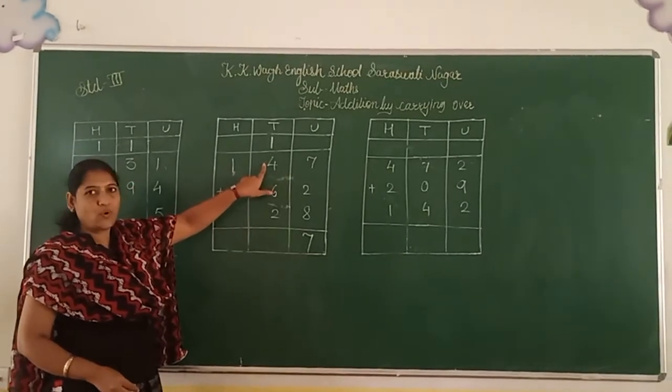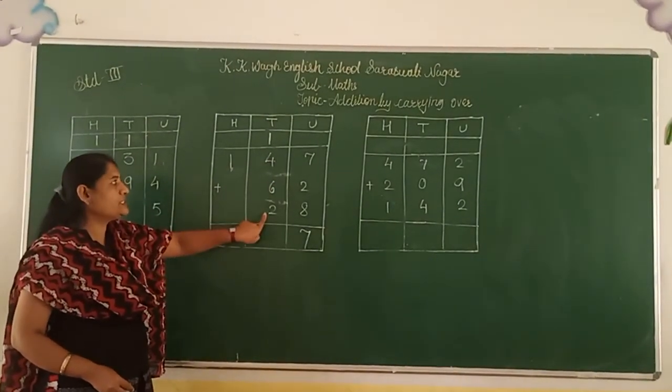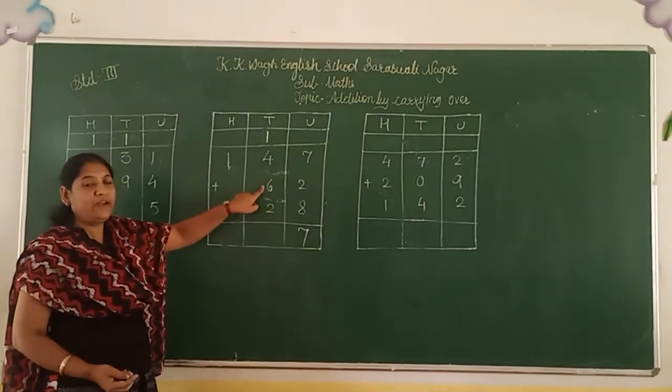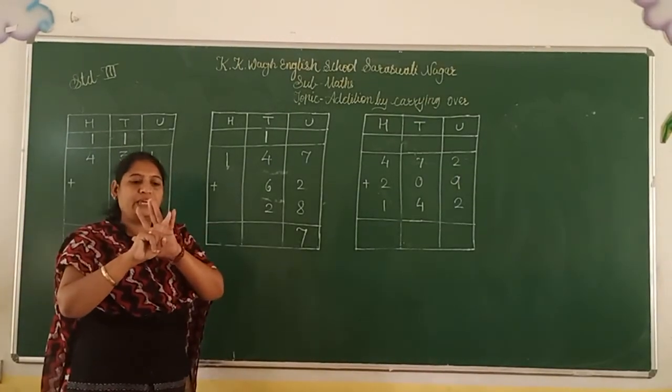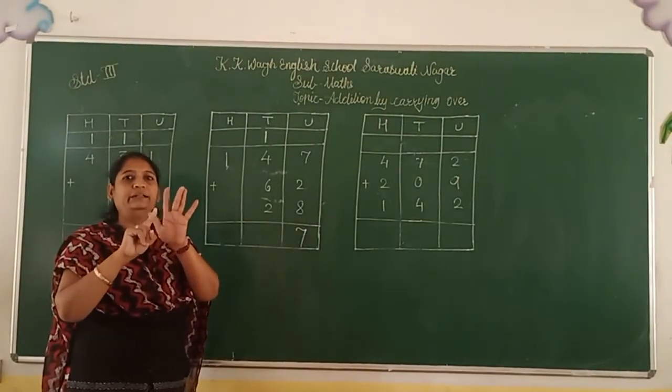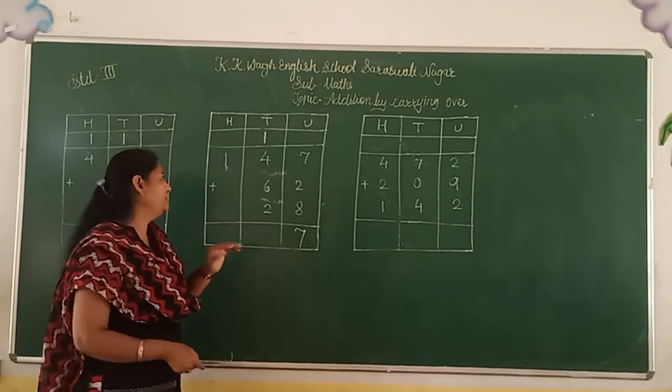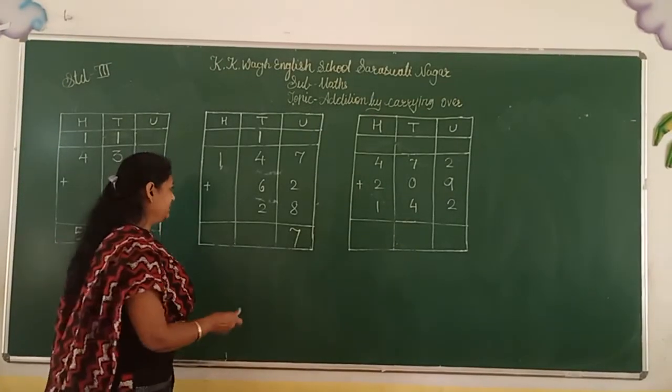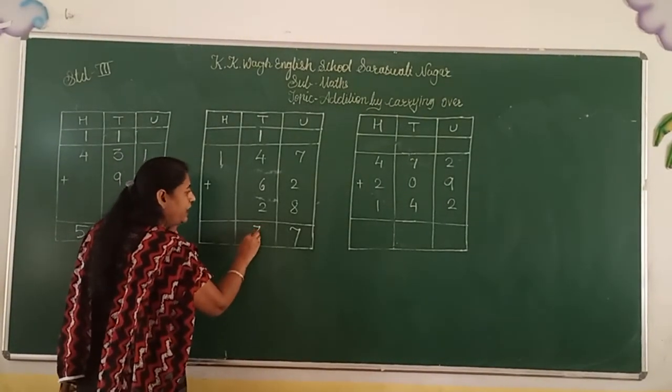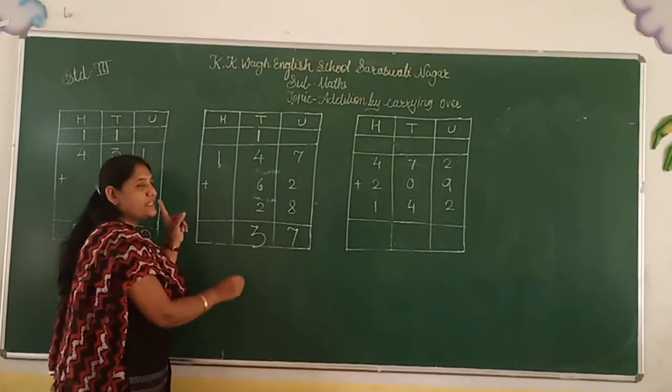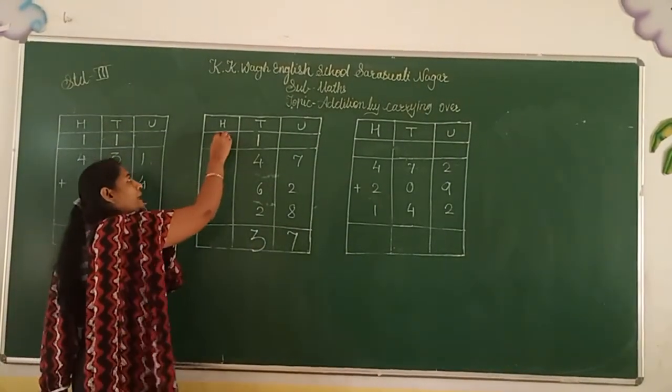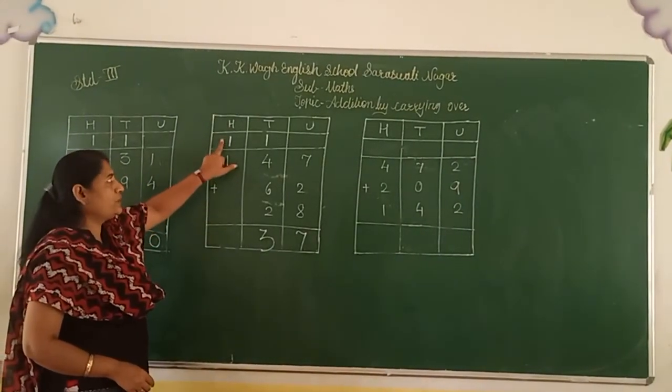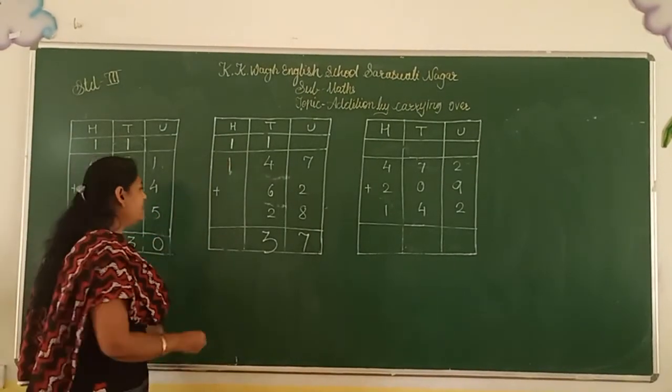1 plus 4 plus 6 plus 2. 1 plus 4 means 5. 5 plus 6 equals 11. 11 plus 2 equals 13. So we keep the 3 in 10 space and 1 can be in 100 place. So 1 plus 1 is equal to 2.